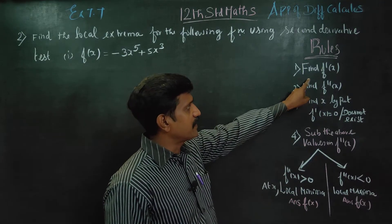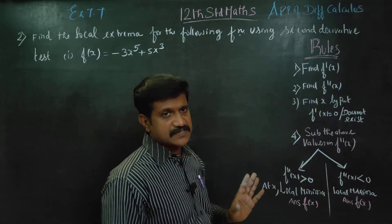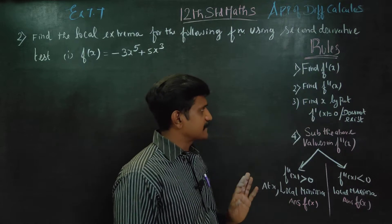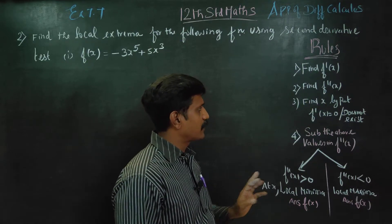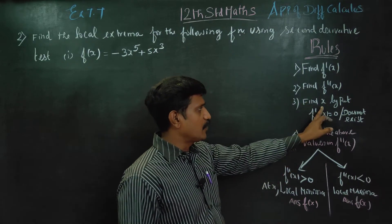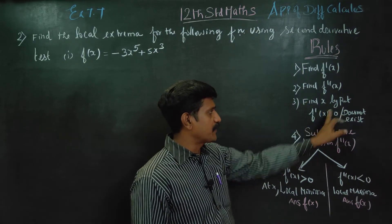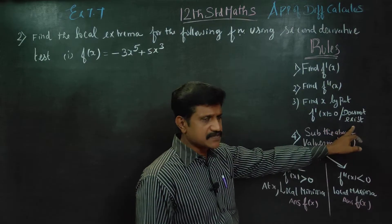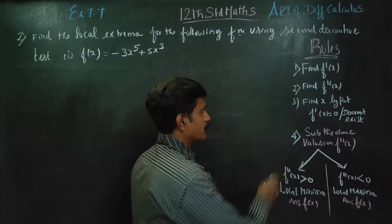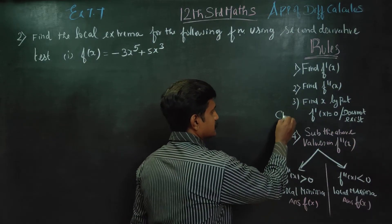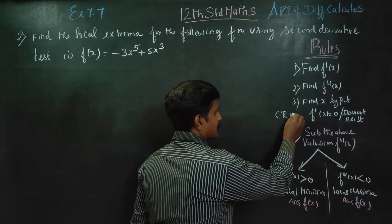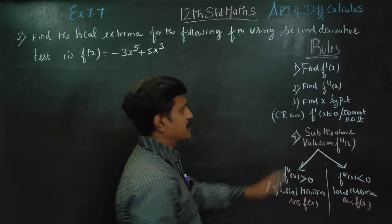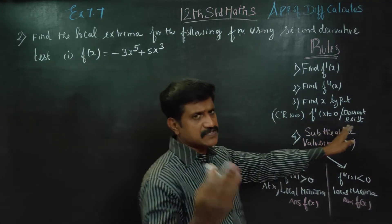First, find f'(x). Then find f''(x). Find the value of x by putting f'(x) equal to zero, or where it does not exist. These are called the critical numbers. Critical numbers are obtained by putting f'(x) equal to zero or does not exist.